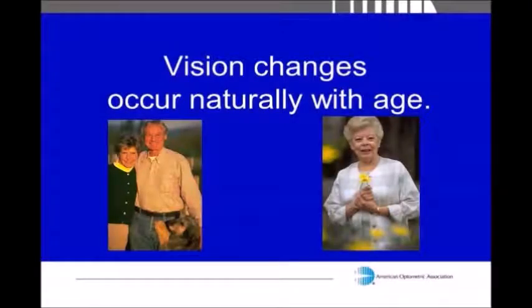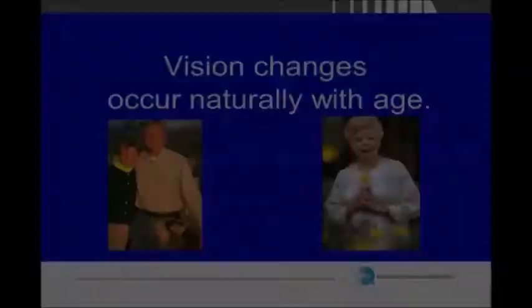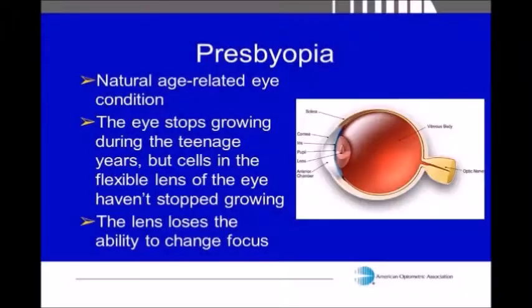We can experience vision changes at any age, even as children or as young adults, but mostly at the age of early 40s most people will notice significant changes. One of the most common vision changes people begin to notice in their early to mid 40s is that their arms aren't long enough. You may find yourself trying to read at night, or at a restaurant looking at the menu in dim lighting.